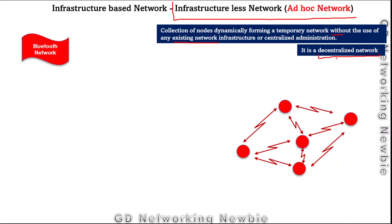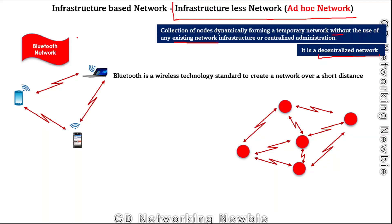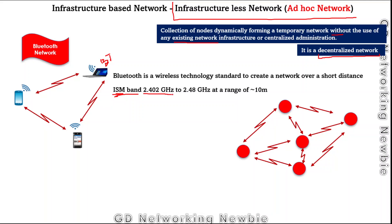One example of an infrastructure-less or ad hoc network is a Bluetooth network. Bluetooth is a wireless technology standard for creating a network over a short distance. Nodes with Bluetooth capability can form a network on their own without any central entity, communicating directly in peer-to-peer mode. Bluetooth uses the ISM band — Industrial, Scientific, and Medical band — spanning 2.4 to 2.48 GHz, with a coverage distance of within 10 meters.